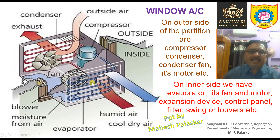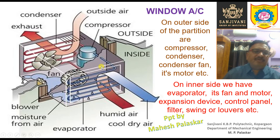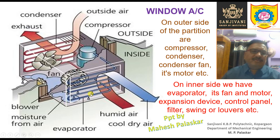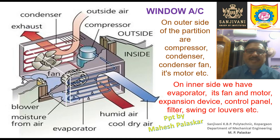On the inner side we have the evaporator coil, centrifugal fan, motor for this fan, and the expansion device — which may be a capillary tube. The expansion device starts after the condenser ends. The control panel has various switches used to switch the unit on or off, and to increase or decrease the cooling rate.